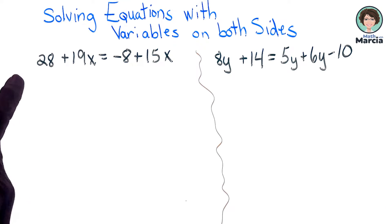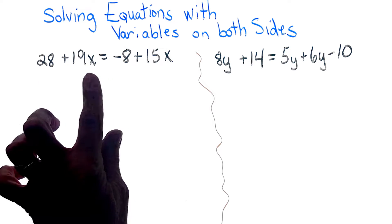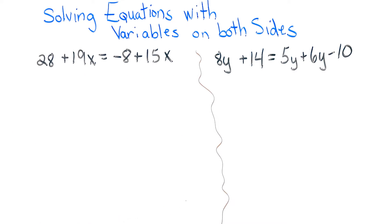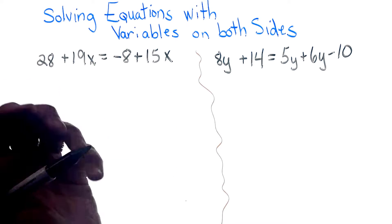Looking at the equation 28 plus 19x equals negative 8 plus 15x, I see that both sides of the equation are in simplest form, so I can't put anything together. I'm going to start by moving my variable to the left side.